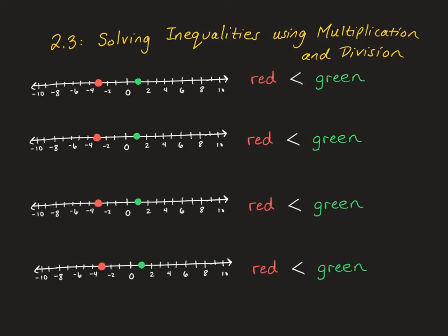Before we get into doing some problems, I want to go over something that happens when you add, subtract, multiply, and divide by positive and negative numbers. You'll notice that I created four number lines here, and they're all exactly the same. In every single number line, I have a red dot right now at negative 3, and a green dot right now at positive 1. And in all four cases, red is less than green.